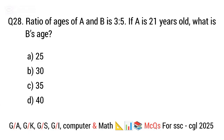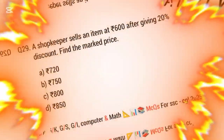Question 28. Ratio of ages of A and B is 3:5. If A is 21 years old, what is B's age? The right answer is option C. 35.